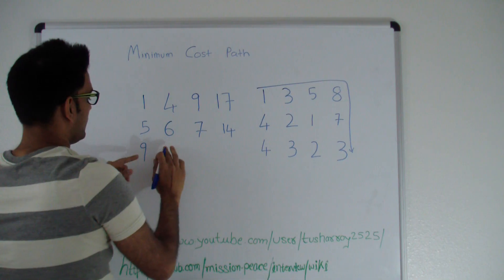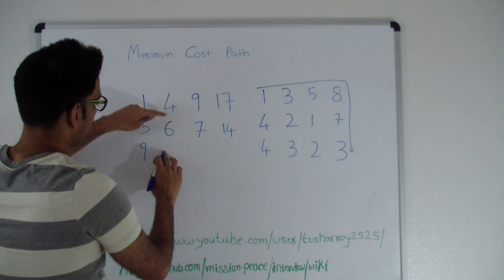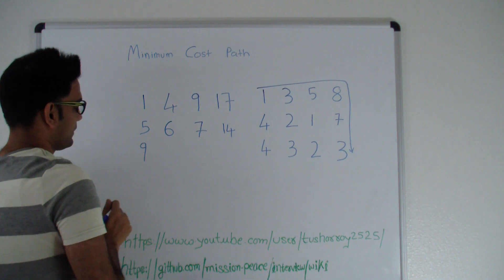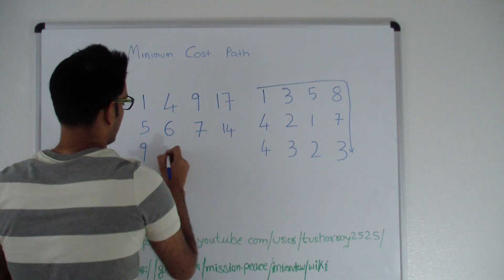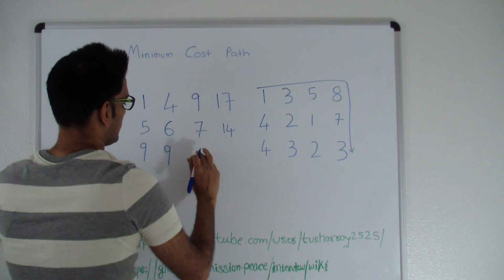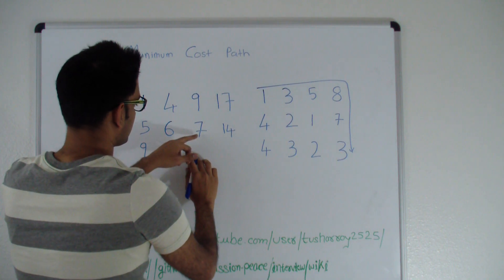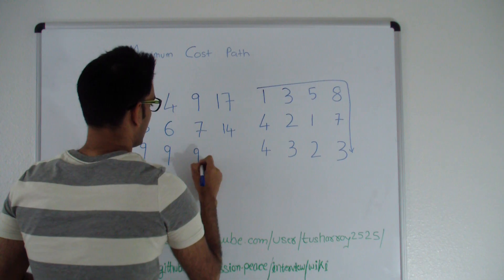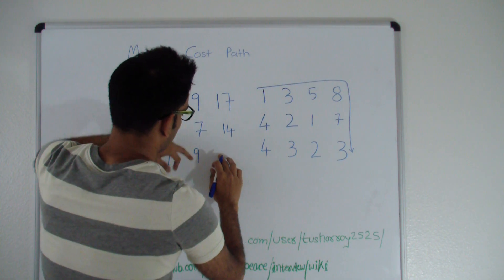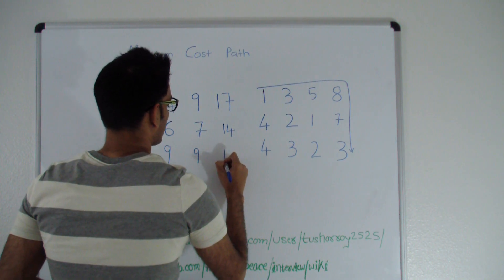Let's fill up this last row. It's cheaper to come from top rather than to come from left. So the cost to reach here is 6 plus 3, which is 9. The cost to reach here is minimum of the 2, so 7 plus 2 is 9. Cost to reach here is minimum of the 2, so 9 plus 3 is 12.